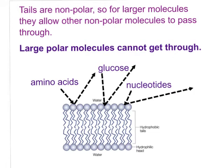Remember from our last section: like dissolves like. A non-polar molecule will enjoy being around another non-polar molecule but will definitely repel a polar molecule. So here we have our non-polar hydrophobic tails — if a molecule is not really small and it happens to be non-polar, it will be able to go through. But if the molecule is large and polar, it will not be able to go through, because these tails are non-polar and will not allow polar molecules through if they are large.